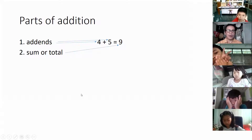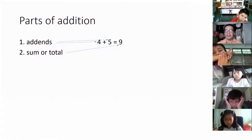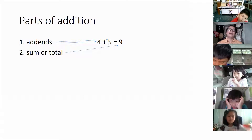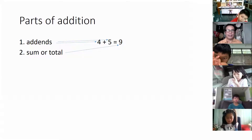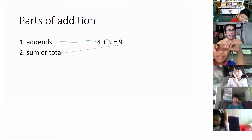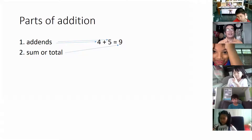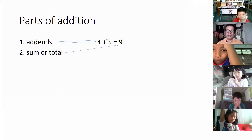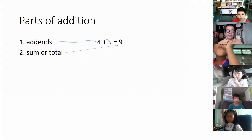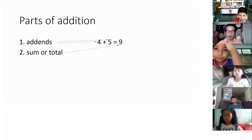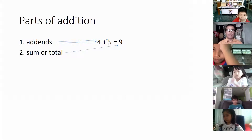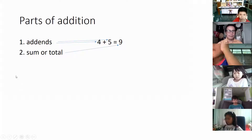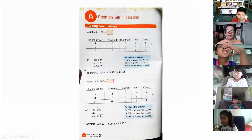Another question — can you give me the addends of seven? Here are the possible answers: it can be three and four, it can be one and six, it can be two and five, it can be four and three. So in addition, we have the word commutative.